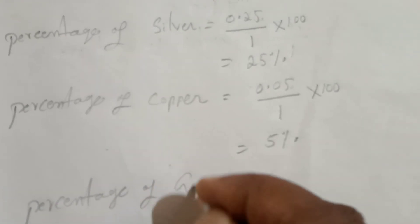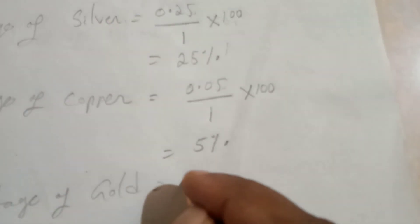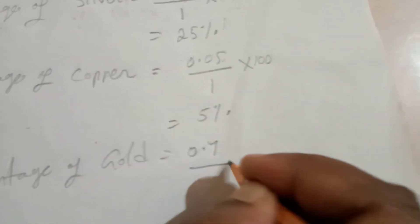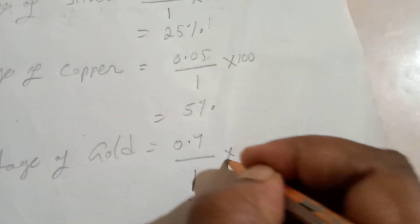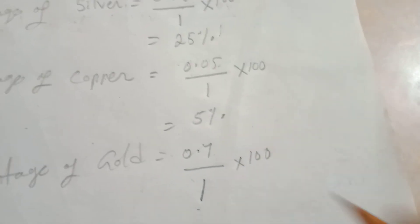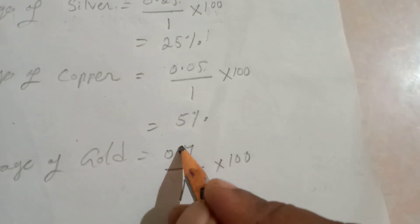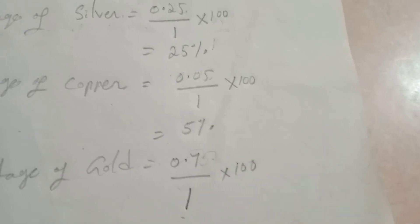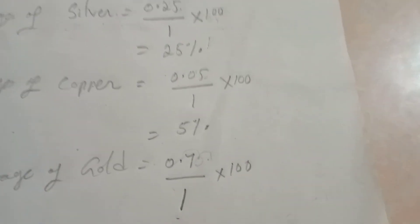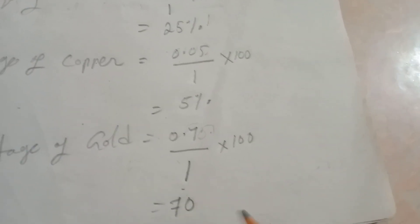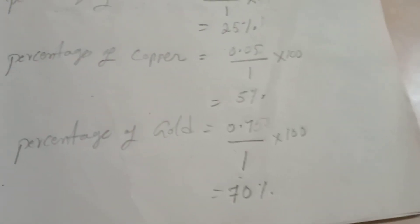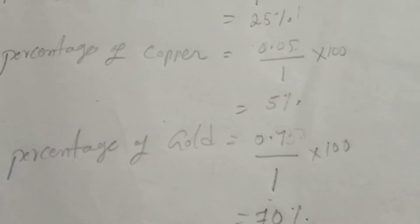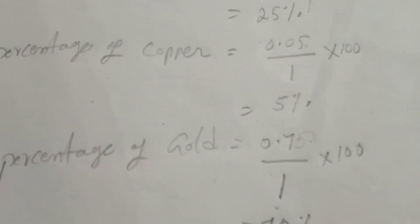Percentage of gold: gold is 0.7, divided by 1 gram, into 100 — here we go — that is 70%. So gold is 70%.